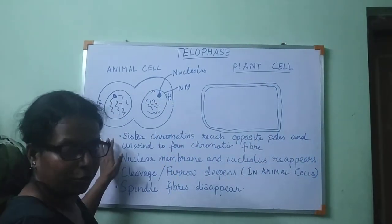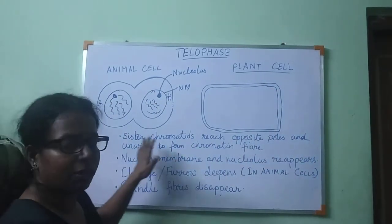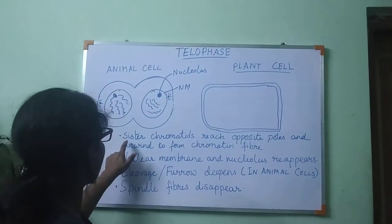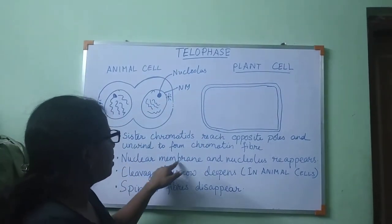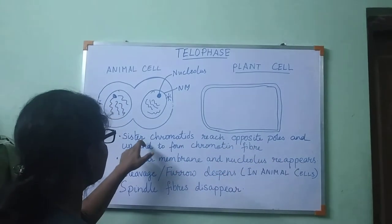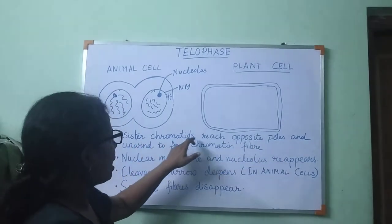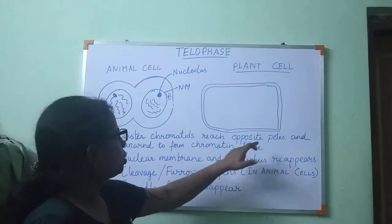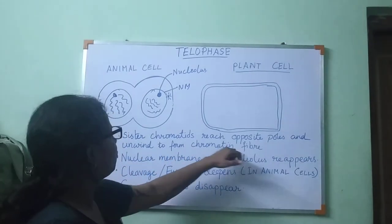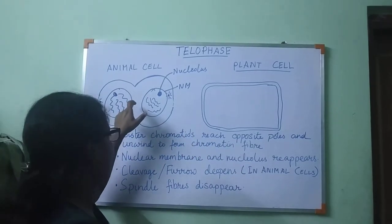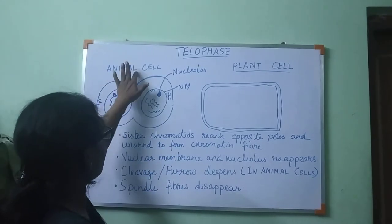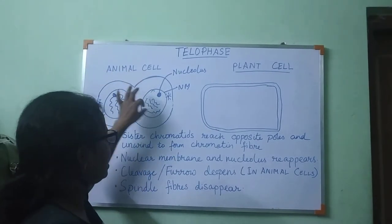Now let's look at the key features of telophase. The nuclear membrane and nucleolus reappear. Sister chromatids reach the opposite poles and unwind to form chromatin fibers. The cleavage furrow in an animal cell deepens.